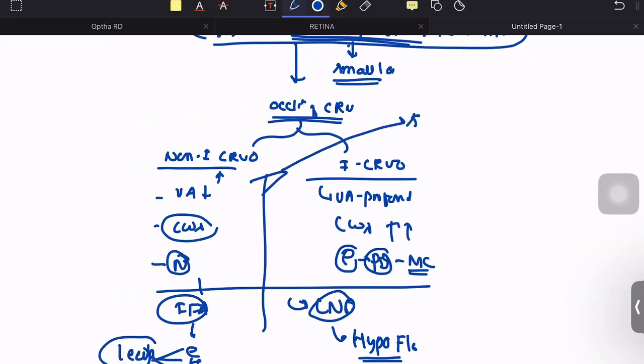Along with that, in both of these cases we can find a specific finding called splashed sauce appearance, where because of the flame-shaped hemorrhages occurring around the margins of the optic disc. So around the margin of the optic disc, we can see multiple flame-shaped hemorrhages called splashed sauce appearance.